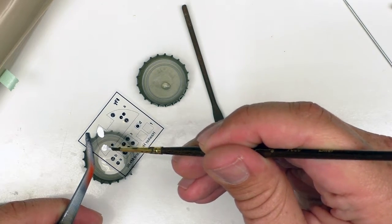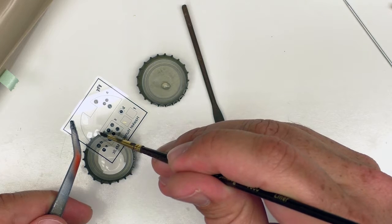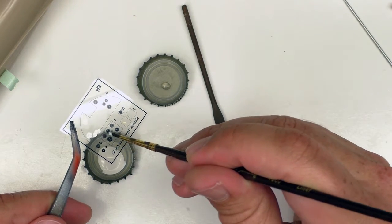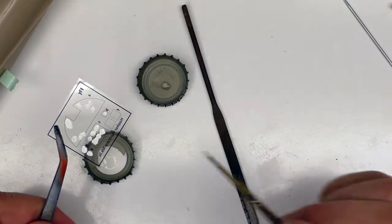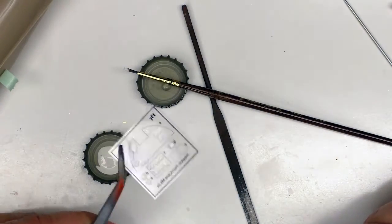One thing I like about using Vallejo for the acetate gauges is it's thick enough that you can get a nice level of opacity pretty quickly. And there you have it. That's all there is to it.